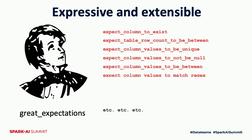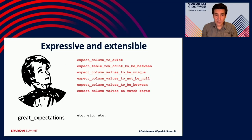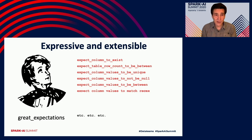Every data scientist has their own data horror stories. In a previous company, we were periodically training a system to provide answers to frequently asked questions in customer support. One morning the last night's training results were off the charts — amazing. But a short moment of elation was replaced by disappointment when we dug in: apparently somebody had swapped the question and answer columns, so instead of training answers based on questions, the system had trained itself to choose an answer based on an answer — a much easier, and of course completely useless, problem.